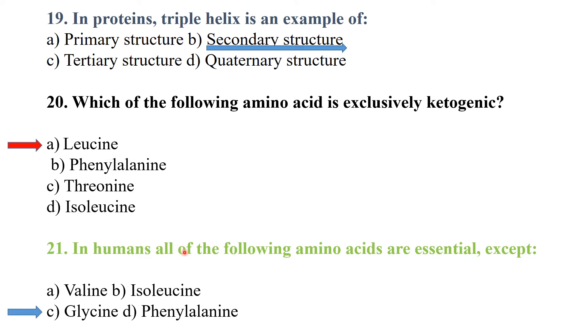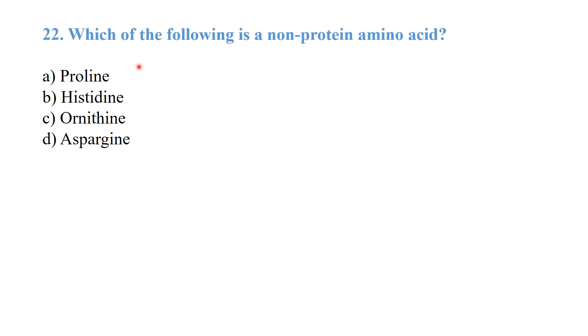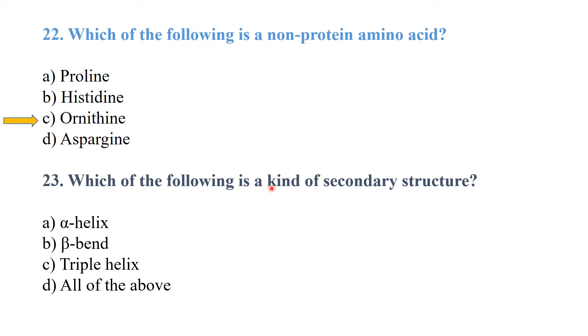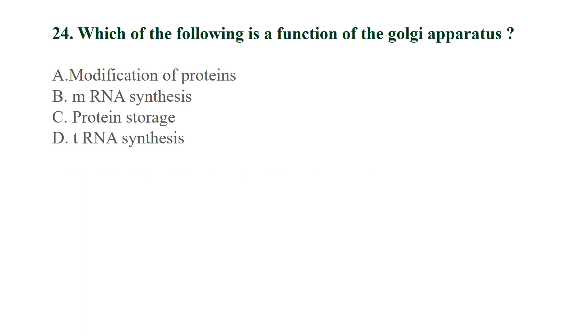All of the following amino acids are essential except glycine. Which of the following is a non-protein amino acid? Beta-alanine is a non-protein amino acid, not involved in the synthesis of protein. Which of the following is a kind of secondary structure? All of the above are secondary structures: alpha helix, beta helix, and triple helix. Which of the following is a function of the Golgi apparatus? Modification of proteins.